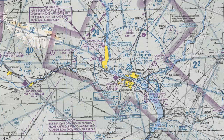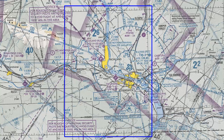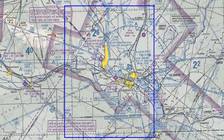Now let's take a look at how MEFs are calculated. MEFs are calculated for each quadrant bounded by latitude and longitude lines on the sectional aeronautical chart. The calculation is different depending on whether it's a man-made or a natural obstacle.